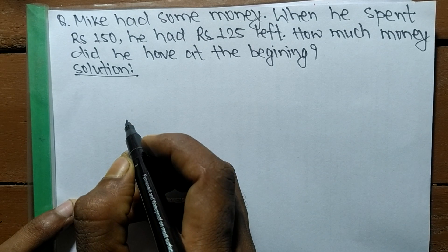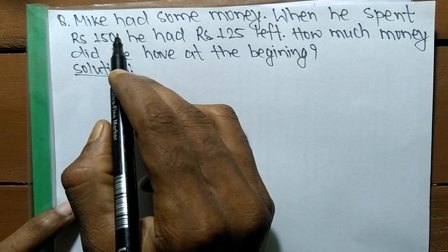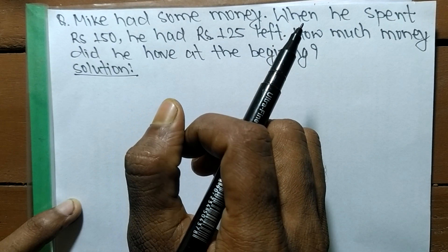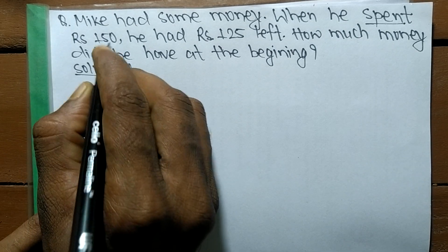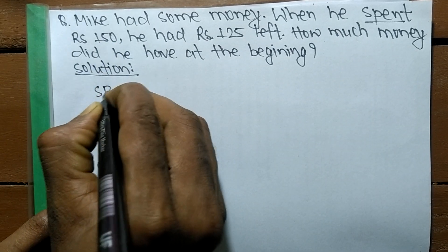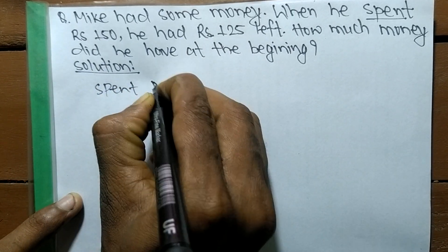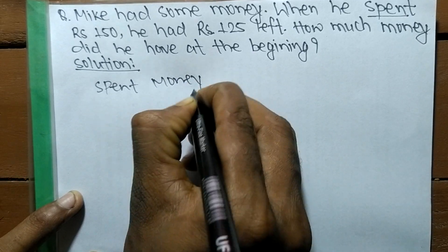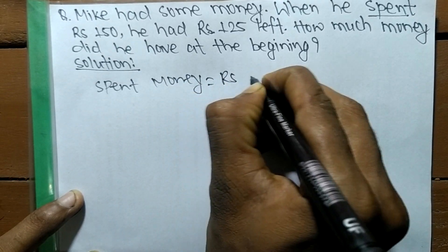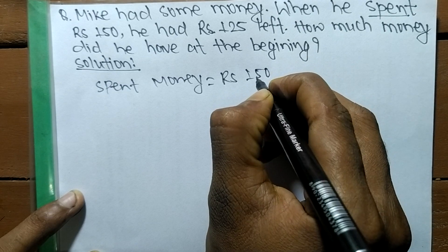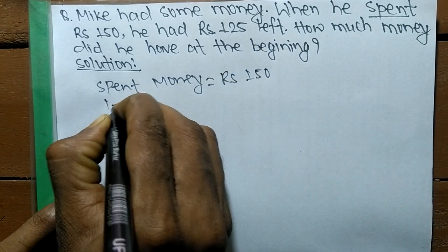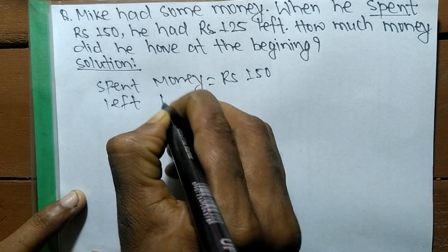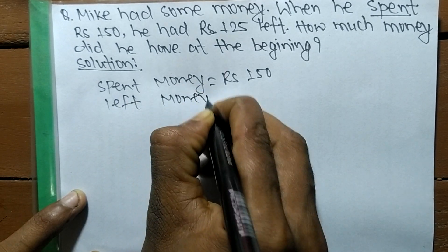Here we have two cases. Mike had some amount of money, and from that money he spent RG 150. So spent money is equal to RG 150. From that, he has some amount left, so left money is equal to RG 125.